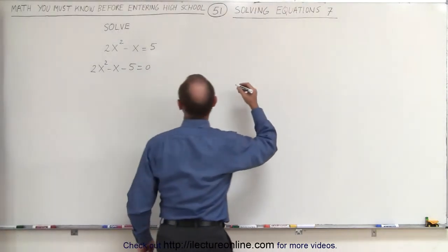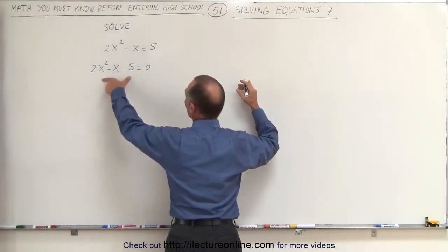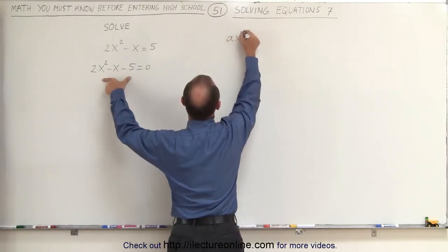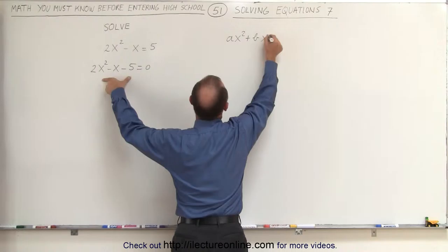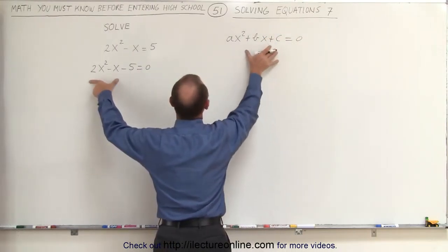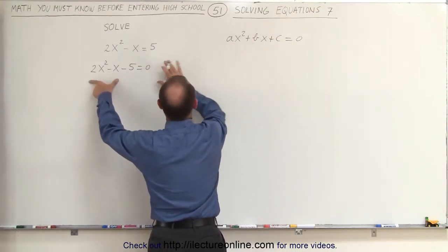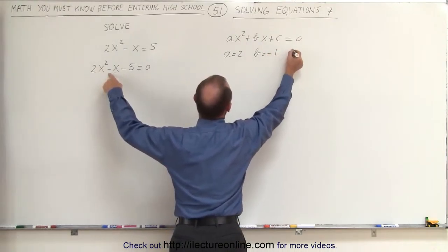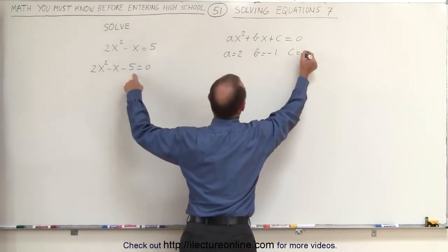The quadratic formula can be used when you realize that any quadratic equation like this can be written in the general form as ax squared plus bx plus c equals 0. If we apply this to our equation here, a in this case is equal to 2, b is equal to negative 1, and c is equal to negative 5.